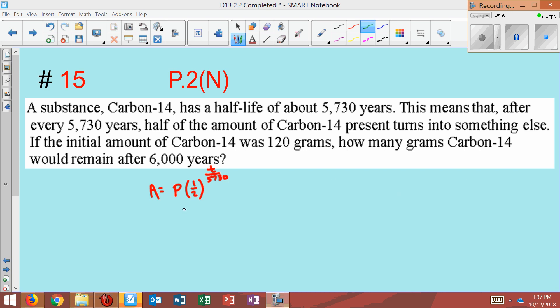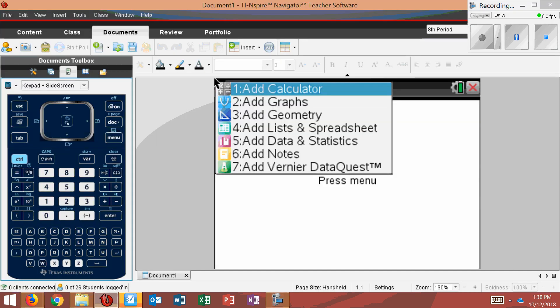And so we want to know, if you start with 120 grams and we do this for 6,000 years, it should be more than cut in half. Because 5,730 would cut it in half, so it's going to be a little bit less than 60. Let's go to our calculators and see what we get.